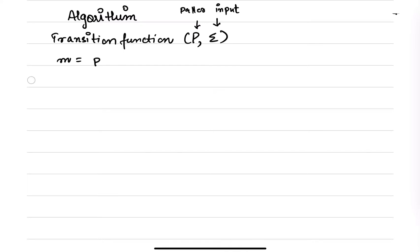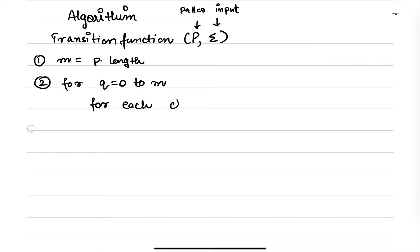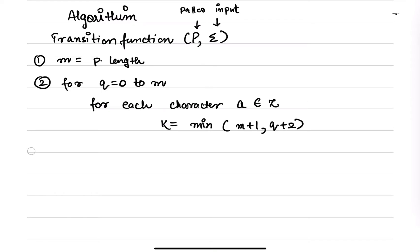You need m, that is your pattern length. Then for q equals 0 through m — that is your complete pattern — you are going to check for each character that belongs to Σ (sigma), and you are going to take k as equals to the minimum of m+1 or q+2, which is nothing but initializing k.